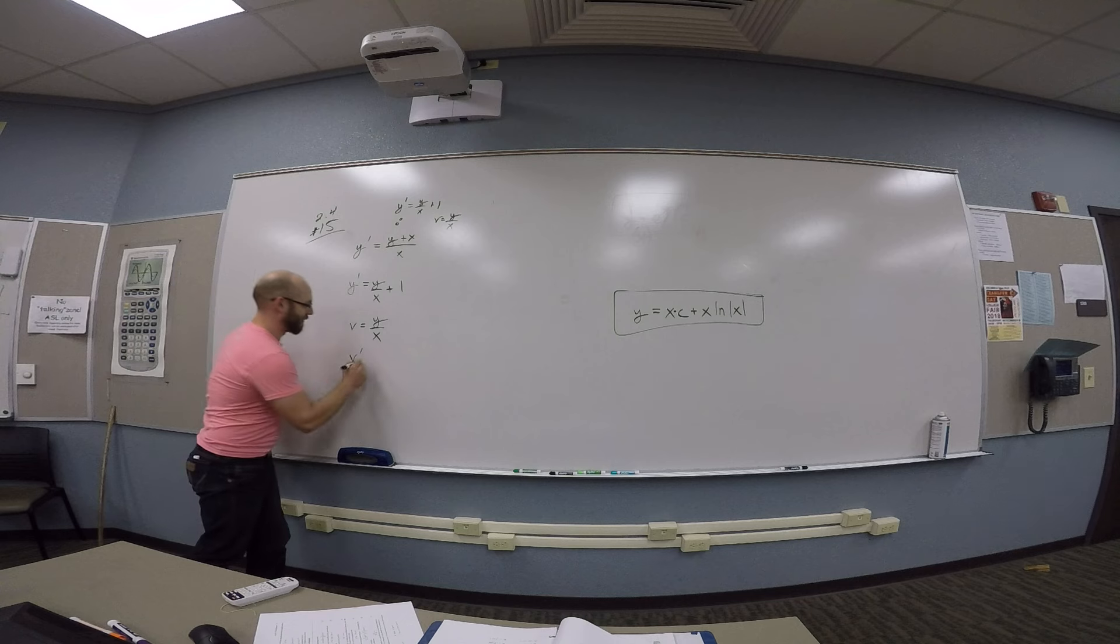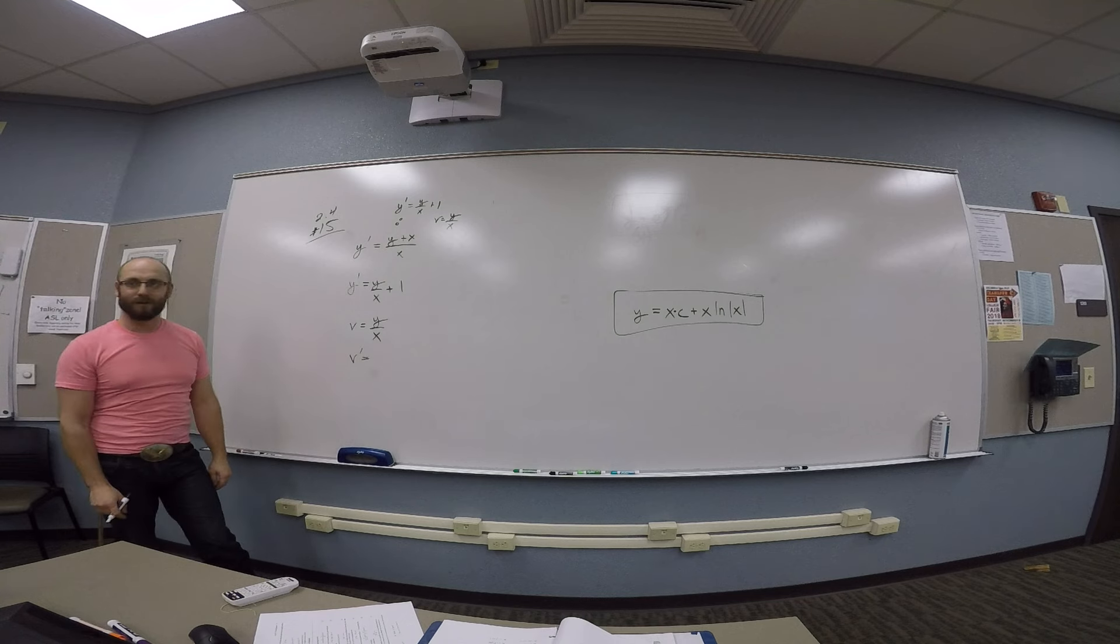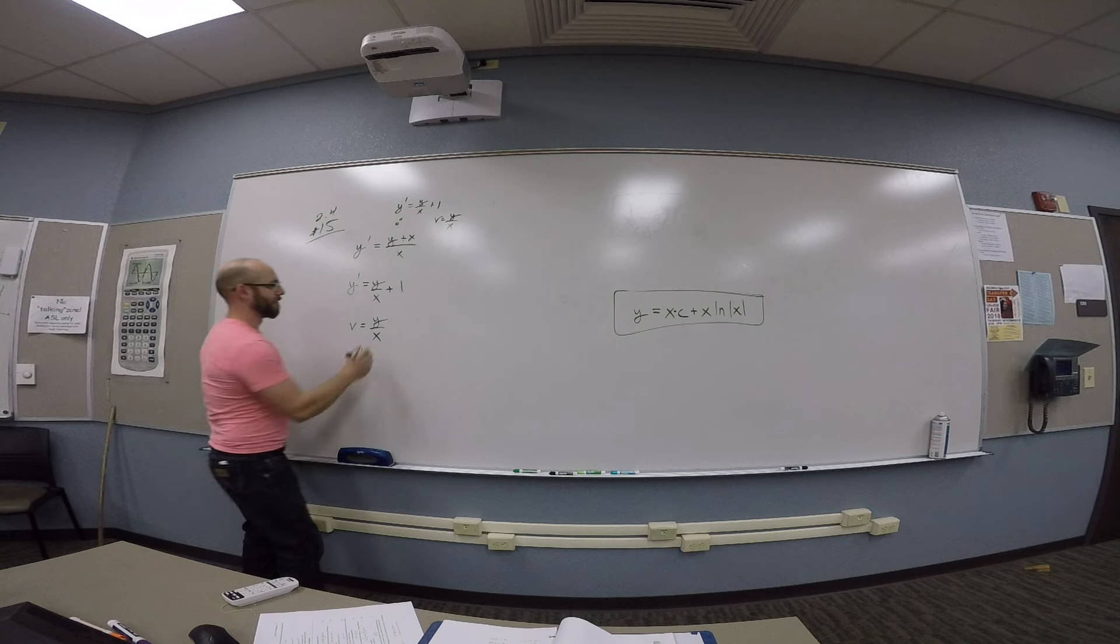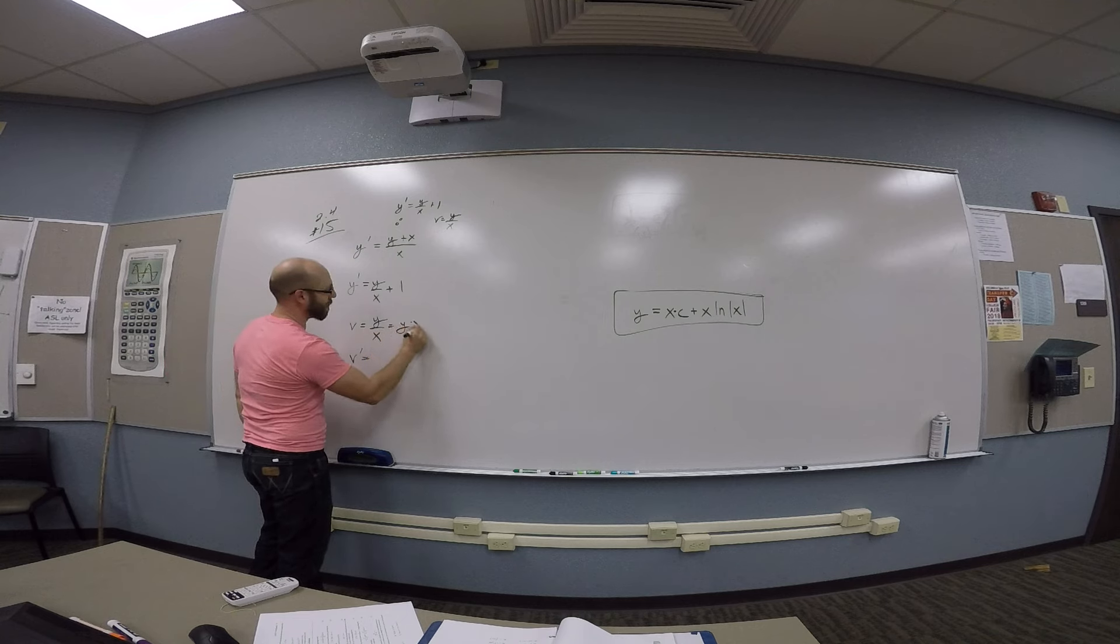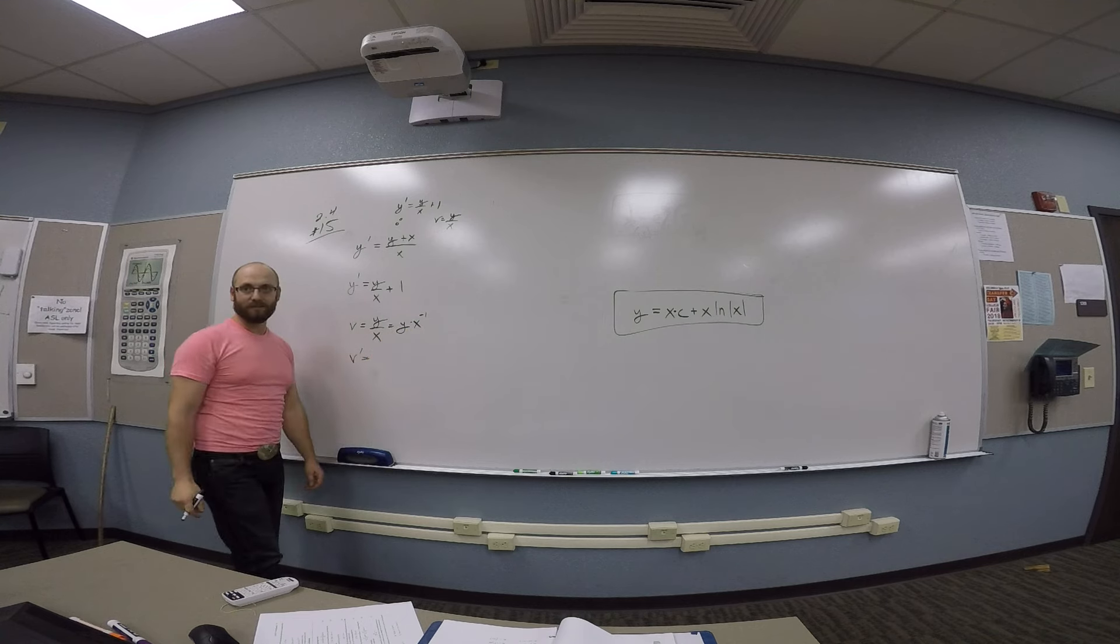So v prime then, you get out of doing some kind of product rule or quotient rule. Y prime over x. So v is y times x to the minus 1. You get derivative of the first thing,